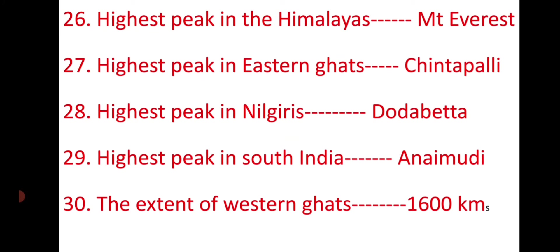The highest peak in the Himalayas is Mount Everest. The highest peak in the Eastern Ghats is Mahendragiri, located at Chintapalli. The highest peak in the Nilgiris is Dodabetta. The highest peak in South India is Anamudi. The extension of the Western Ghats is 1600 km.